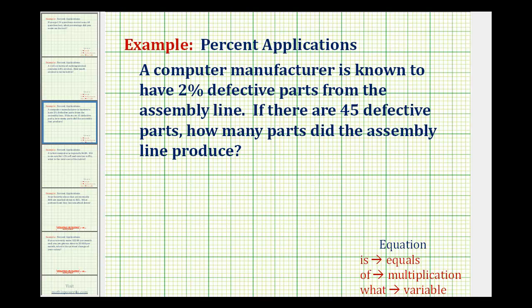A computer manufacturer is known to have 2% defective parts from the assembly line. If there are 45 defective parts, how many parts did the assembly line produce?